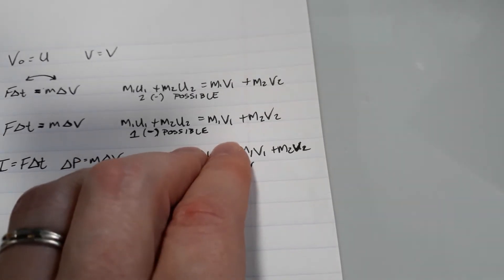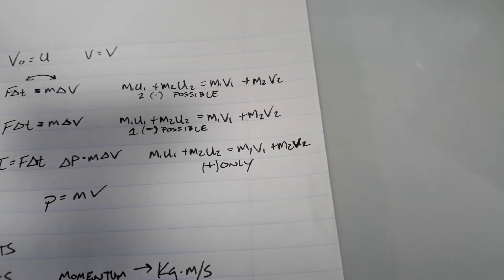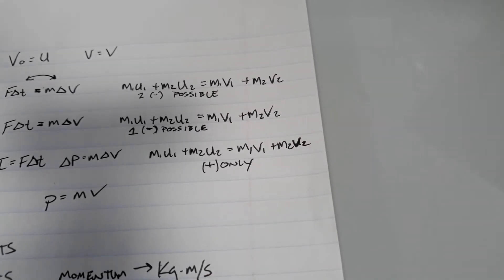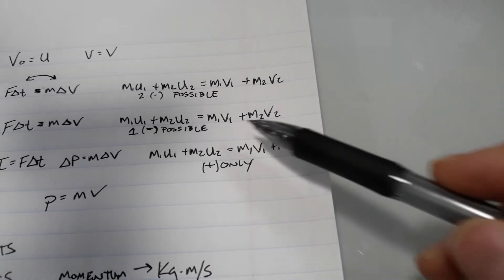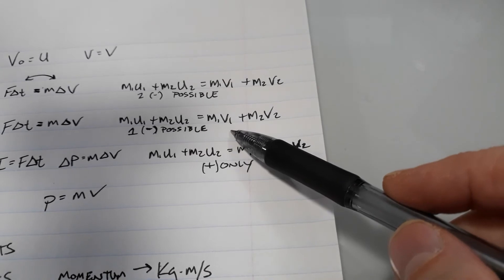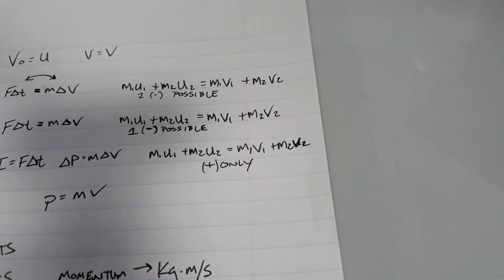So at level three, you solve the exact same problems, but now there might be a negative velocity. Maybe two cars are coming at each other. They can't both be positive if they're traveling in opposite directions. There will be the potential that you might see one negative velocity in the four velocities you have in this equation. And then at level four, we're going to open it up to everything. Any possible combination of collisions is possible, and that means you could have as many as two negative signs for velocities.